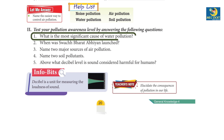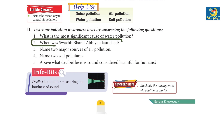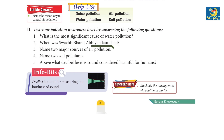1. What is the most significant cause of water pollution? Industrial waste. 2. When was Swachh Bharat Abhiyan launched? 2 October 2014.